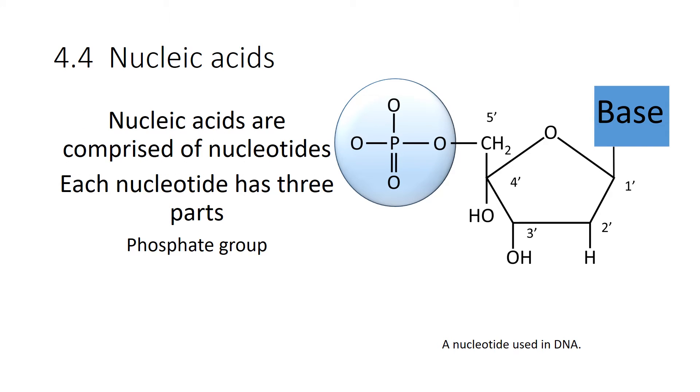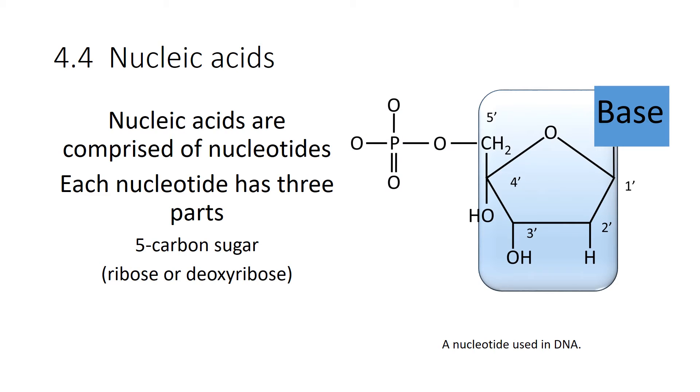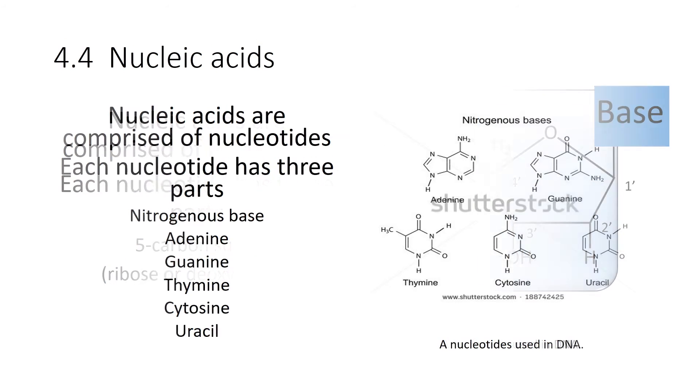Each nucleotide has a phosphate group attached to it. There is also a ribose or a deoxyribose sugar. There's two different types of sugars, and they're very, very similar. So nucleic acids, they're comprised of three parts: your phosphate, your sugar, and one of the nitrogenous bases.